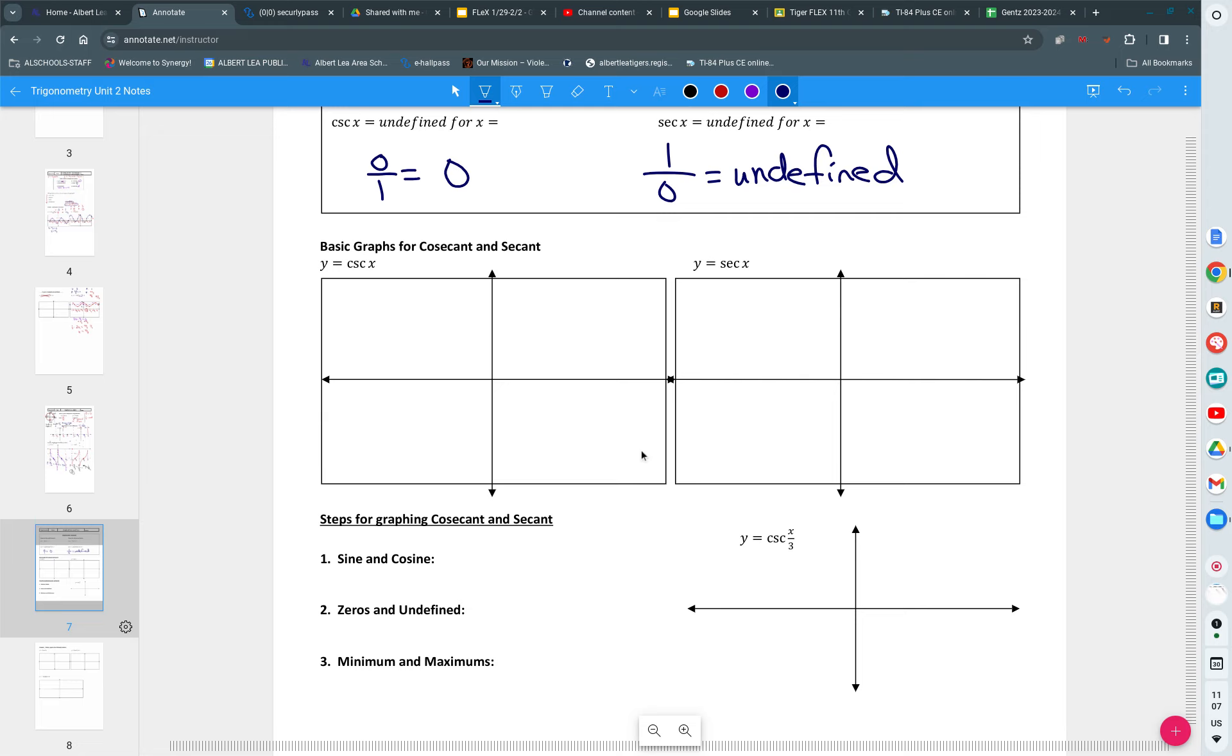Amen to that. All right, so one thing I need to write down: we're not going to fill all these notes, we're filling different parts. One thing I want you to write is that zero over one is zero. When zero's on the top you get zero. When zero's on the bottom it's undefined. We have discussed that before, have we not? We're going to use that idea very much so as we graph cosecant and secant.